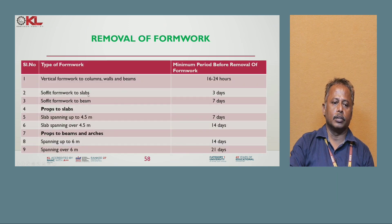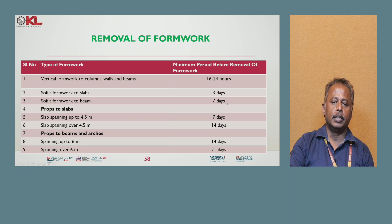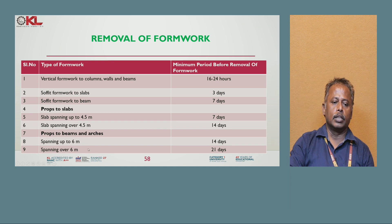Removal of formwork timing: for vertical columns and walls, a minimum of 16 to 24 hours is required. Soffit formwork to beams requires 7 days. Props to slab up to 4.5 meters can be removed after 7 days; for slabs over 4.5 meters, removal is after 14 days. Props to beams and arches up to 6 meters require 14 days, and for those over 6 meters, 21 days.